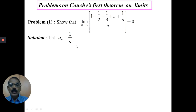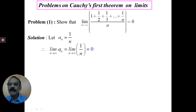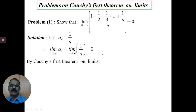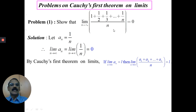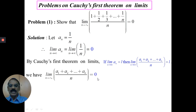This is how we choose a_n when doing problems on Cauchy's first theorem on limits. Now let us find the limit of a_n. The limit of a_n is the limit of 1/n as n tends to infinity, which equals 1/∞ = 0. Then, by Cauchy's first theorem on limits, if sequence a_n converges to l, then the arithmetic mean of the first n terms also converges to l. Here the sequence a_n converges to 0.